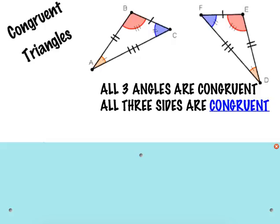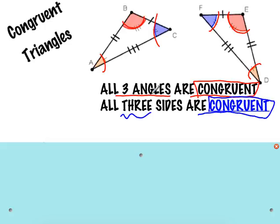So congruent triangles is reviewed from before. Just remember again that we have three angles that are congruent, meaning they're exactly the same, which are marked here on our picture for us in colors. And then remember that our sides are also congruent. All three sides need to be the exact same. They're identical, exactly the same size, exactly the same in every way.